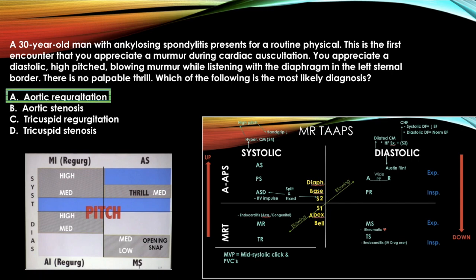The answer is aortic regurgitation. It is diastolic and high-pitched — just using the pitch chart, diastolic high-pitched = aortic regurg. You can also use Mr. Taps: it's diastolic and blowing, which narrows it down to aortic regurg or pulmonic regurg on that chart.